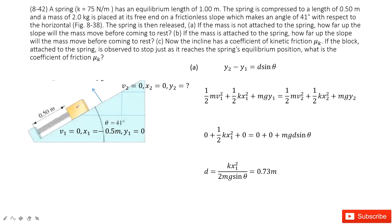You can see the first box is connected with a spring, and this box and spring are on a slope. The angle theta is given, and the spring constant k is also given.